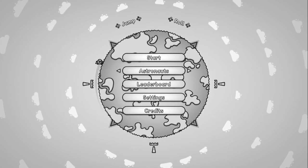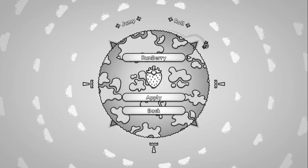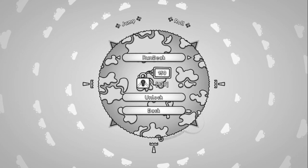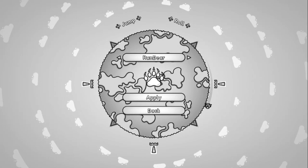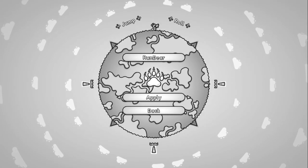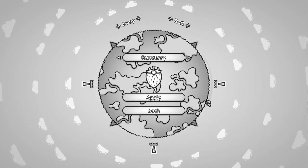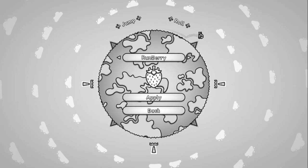So here you have the ability to select different astronauts. I've unlocked two so far, I've got Run Barry and Run Bear. If I hit Apply, that's Run Bear, and that's Run Barry. I'll go ahead and play as Run Bear.